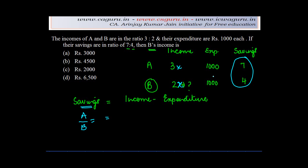is given in the ratio of 7 upon 4 equals the savings of A, which is income of A minus expenditure of A, so 3x minus 1000, upon the savings of B, which are 2x minus 1000. This is because savings equals income minus expenditure. Now you've got an equation with x.